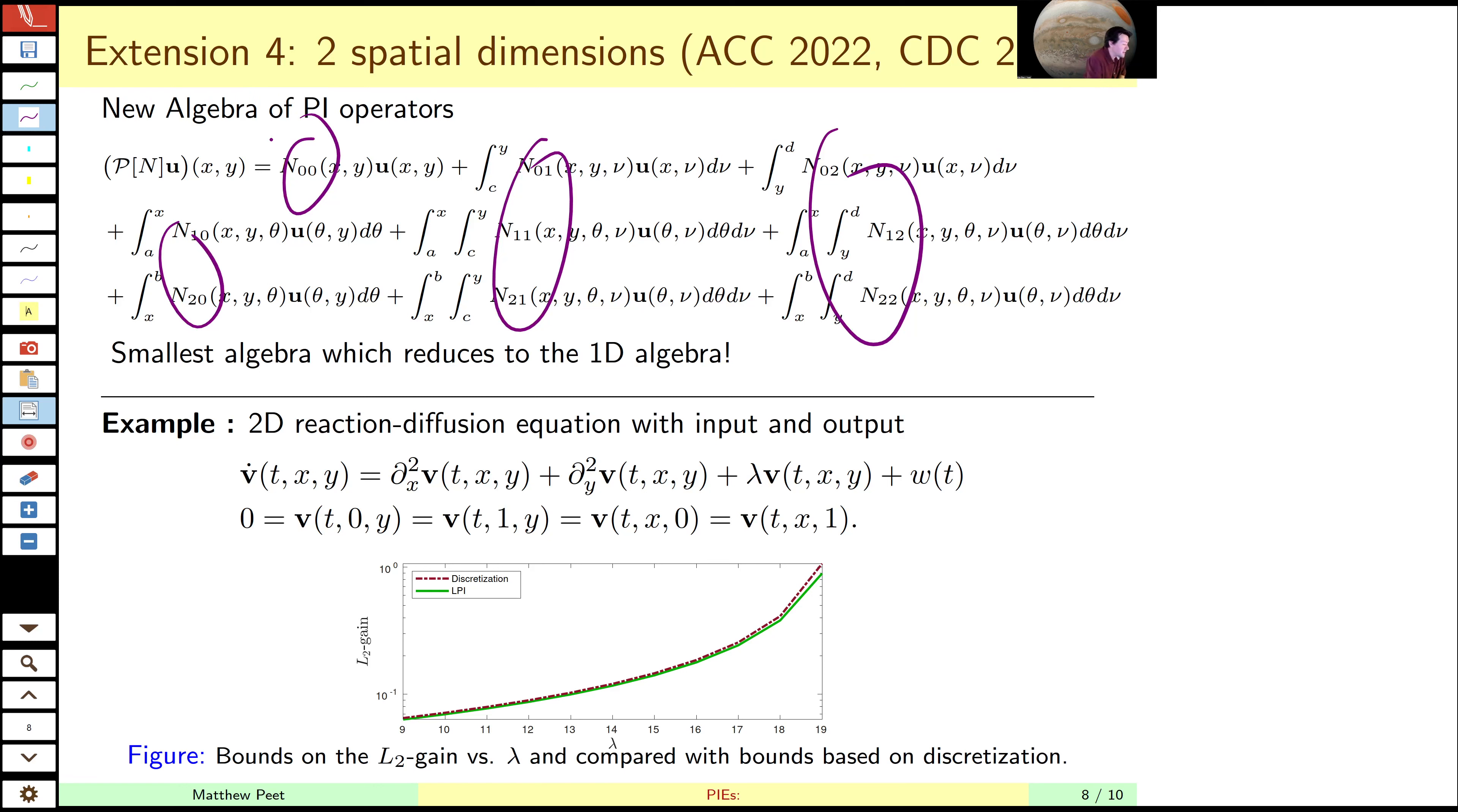Here's our diffusion terms, here's our reaction term, and here's our input. We're going to do L2 gain analysis in this case. Here are our boundary conditions. Notice our functions of these spatial variables, and that makes life a little bit more complicated as well.